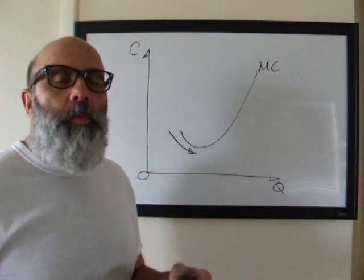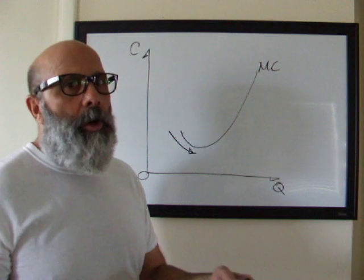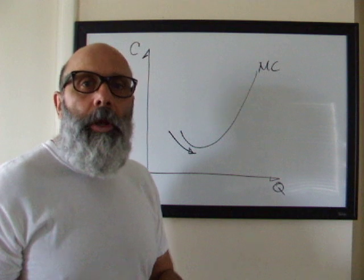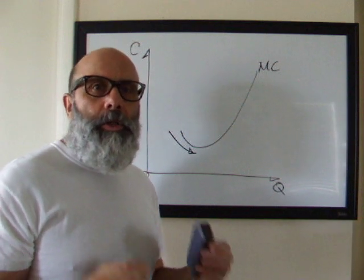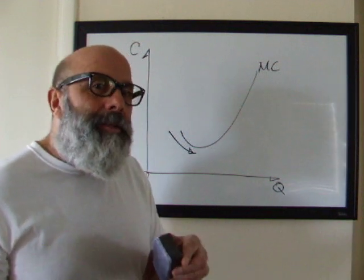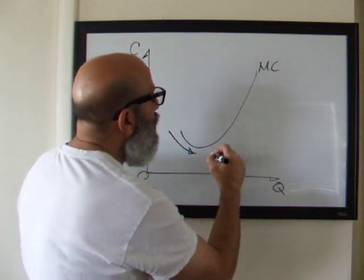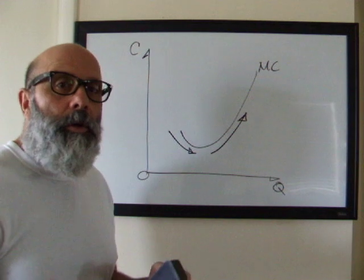At some point in production, we're going to run into diminishing marginal returns. So we're going to continue to add inputs, factors of production, but output will start to rise at a slower pace. That means that cost is going to rise faster than output and that brings us to our upward sloping portion of the marginal cost curve.